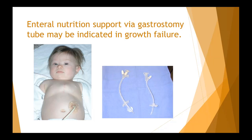If a patient has poor oral intake, a referral to a feeding team has been made, oral intake has been concentrated, and yet the child still experiences poor growth, then enteral nutrition support via a gastrostomy tube may be indicated in patients with growth failure. Whether the tube is percutaneously endoscopically placed (PEG) or surgically placed is a medical decision made together with the family.